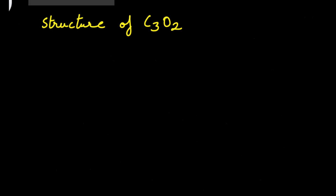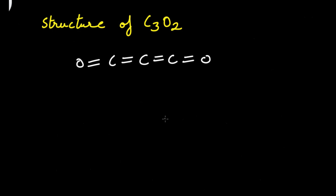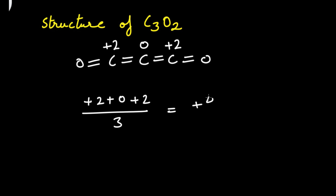The structure of C₃O₂ is: O=C=C=C=O. After examining the structure, the experimental data shows that the central carbon atom has zero oxidation state and the two outer carbons have +2 and +2 oxidation states. Taking the average: (2 + 2 + 0) / 3 = +4/3. This is the fractional oxidation state you calculated using the formula method, but in reality the actual oxidation states are +2, +2, and 0.